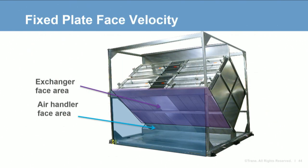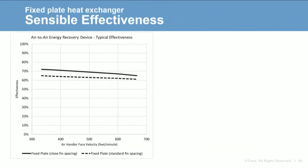In these examples, the fixed plate heat exchanger is set at an angle, meaning the heat exchanger face velocity will be lower than the air handler face velocity. For example, a 500 feet per minute air handler will have an exchanger face velocity between 350 and 400 feet per minute. Sensible effectiveness for a 10,000 CFM fixed plate is generally between 60 and 70%. The slope of the effectiveness lines doesn't decrease as rapidly as other technologies — sizing and plate spacing have the largest impact on effectiveness, while face velocity has lesser impact.